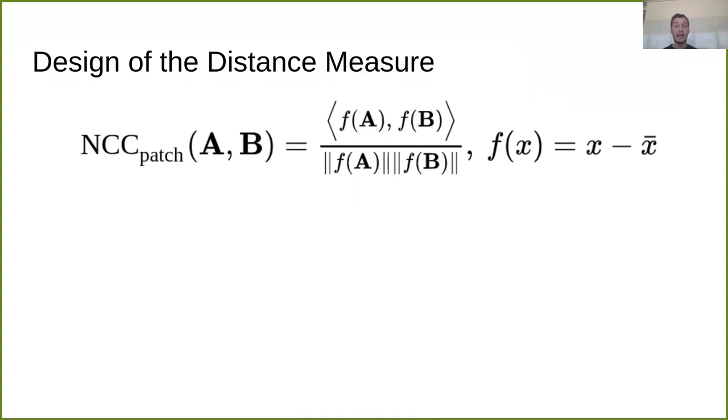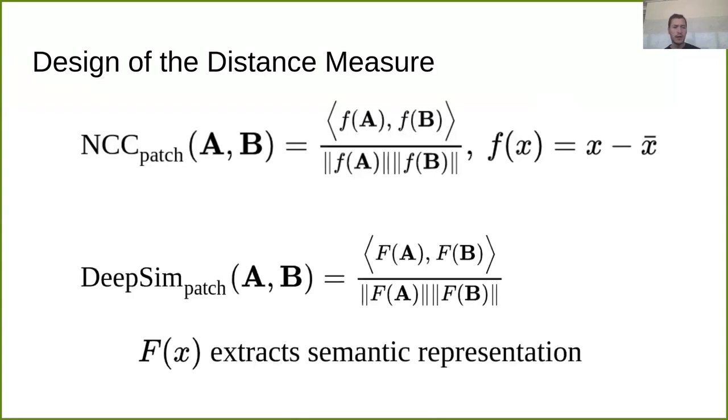And I thought, we can adapt that for a deep semantic metric. And this is where I introduce DeepSim as a patch-based metric. So for two patches A and B, we again take the cosine similarity between them. But now, instead of zero-meaning these vectors, we use this function big F to extract a semantic representation of these patches.